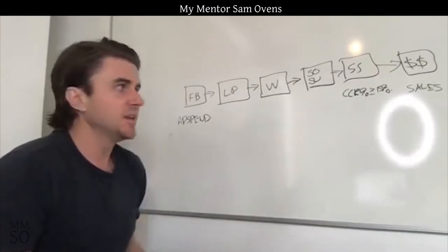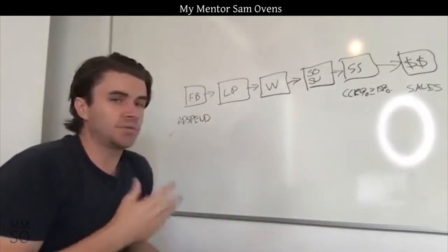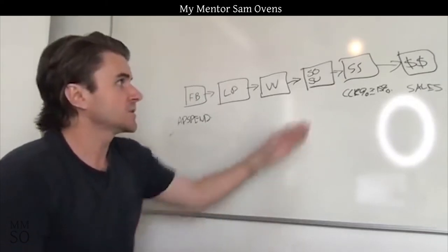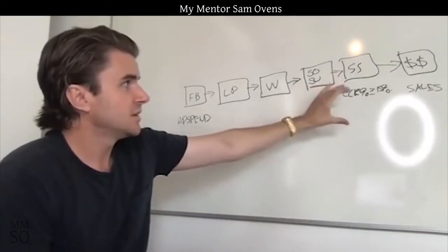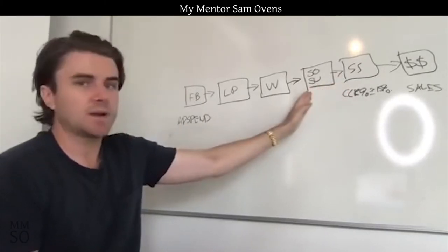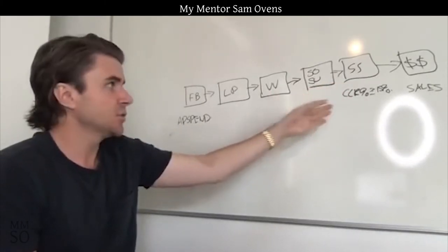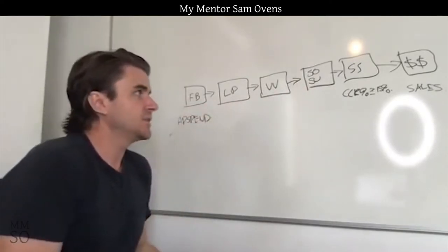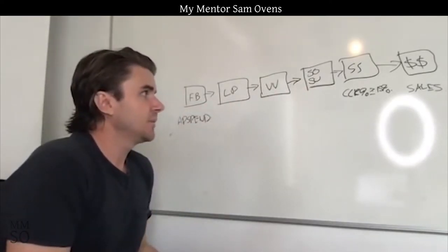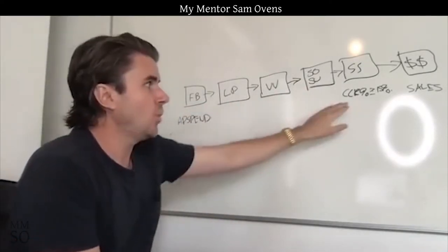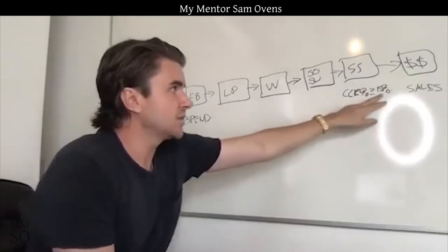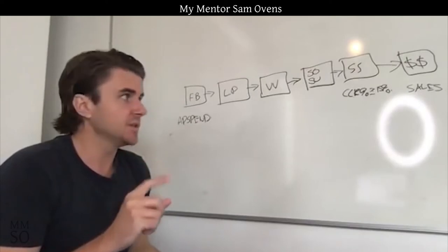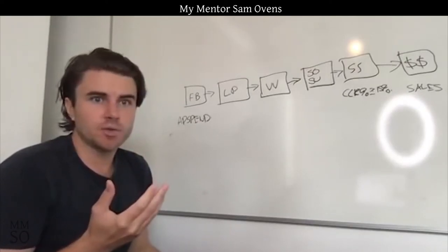You only know that number when you've generated strategy sessions and sold some people. So in the absence of this measurement, we fall back onto the next stage. If you don't have that data, you have to keep falling back. Let's say someone had a call conversion rate of 20% — five strategy sessions and they sold one person. That's a good call conversion rate. There's nothing wrong with that.